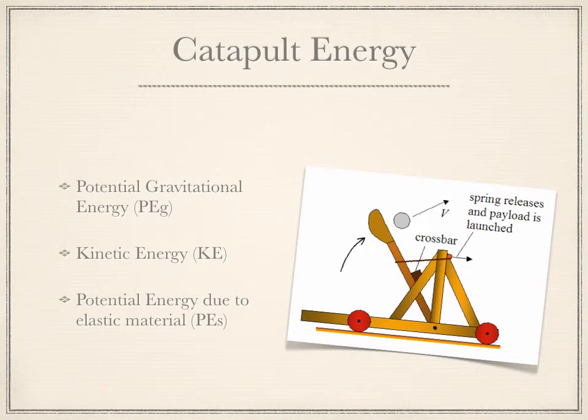There are three main types of energy: potential gravitational energy, kinetic energy, and potential energy due to some form of an elastic material. However, the last one can change depending upon the type. If you're using a trebuchet, you may or may not have this elastic potential energy — it's more due to gravitational energy because of the weight.